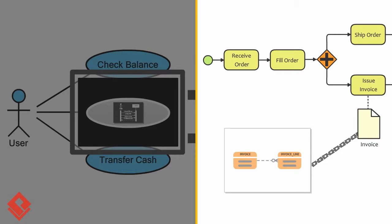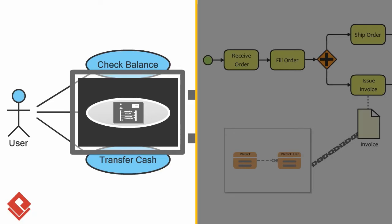In Visual Paradigm, you can add supplementary information to model elements with the help of a reference diagram. You can also maintain multiple levels of abstraction by using a subdiagram. In this video, we will see the major differences between them.